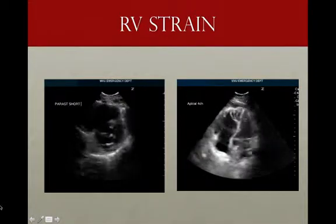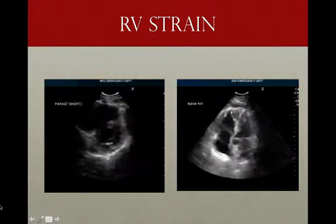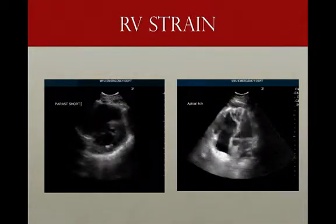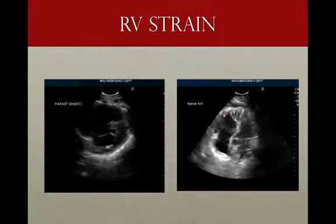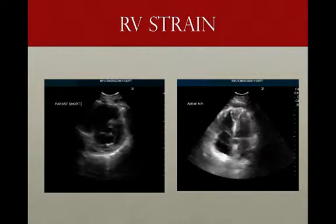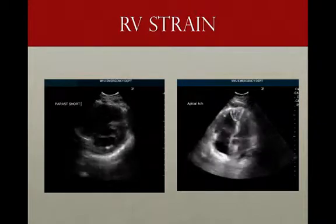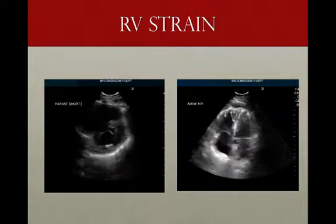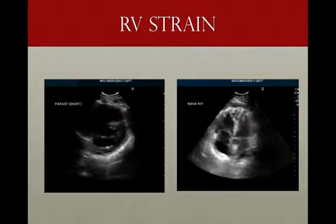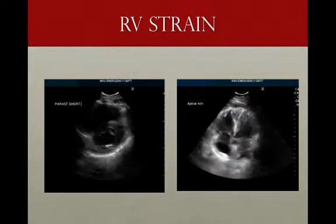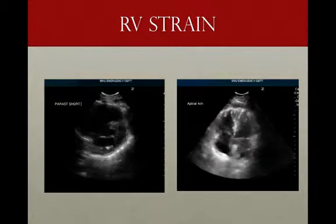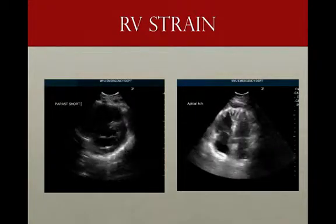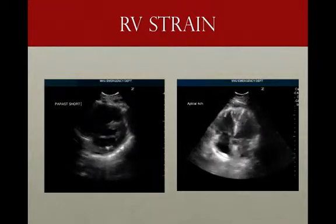We've determined this patient has RV strain. Taking it in context with the clinical picture, it seems likely she has an acute large pulmonary embolism causing shock, and you would want to treat her with thrombolytics.